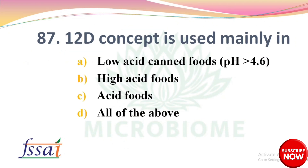The 12D concept is used mainly in which food category? Options: A) Low acid canned foods, B) High acid foods, C) Acid foods, D) All of the above. The right answer is option A: Low acid canned foods, with pH more than 4.6.